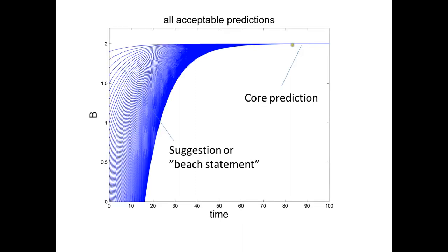Here we see the original blue curve and all the other blue curves, which are simply simulations where we have put in other values of these parameters and then run the simulations. We have not taken arbitrary values for these parameters — we have taken all parameters that can describe the existing data, all acceptable parameters, and then we do simulations for all of those.